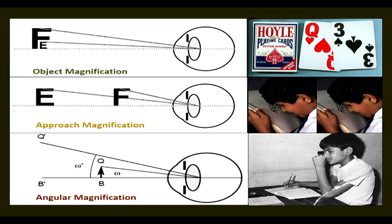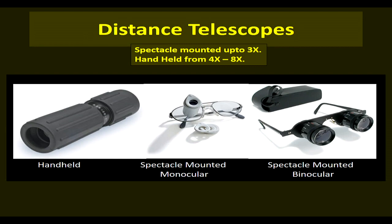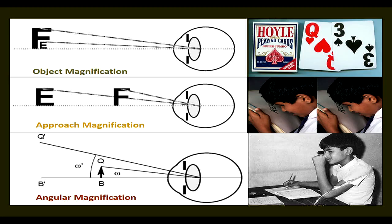As an object approaches the eye, it subtends a larger visual angle and hence increases its retinal spread. The magnification determined by this method is called relative distance magnification. Children use the approach method most, as they have more amplitude of accommodation and can see well at very close distances. Adults have to use corrective lenses for near. For distance, the approach method is also the simplest, most natural, convenient, versatile, and inexpensive method of producing magnification.